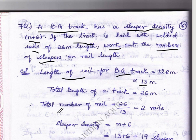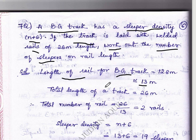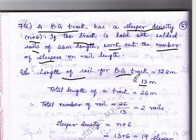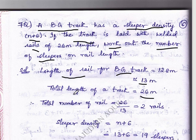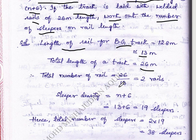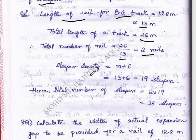We take the rail length as approximately 13 meters because at the end of the solution you may get values like 14.7, 14.8, or 14.9, so we round to the nearest highest value. If the problem is given for meter gauge instead of broad gauge, you also take 13 meters. The total length of the track is given as 26 meters. Total number of rails equals track length divided by rail length, so 26 divided by 13 gives 2 rails.